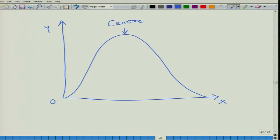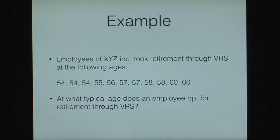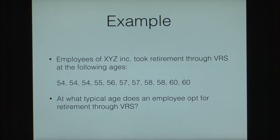Employees of XYZ Incorporated took retirement through VRS — that is, Voluntary Retirement Scheme — at the following ages: 54, 54, 54, 55, 56, 57, 57, 58, 58, 60, and 60. At what typical age does an employee opt for retirement through VRS?